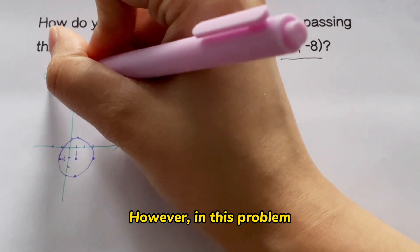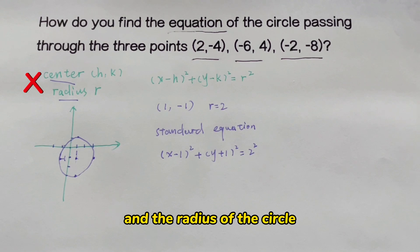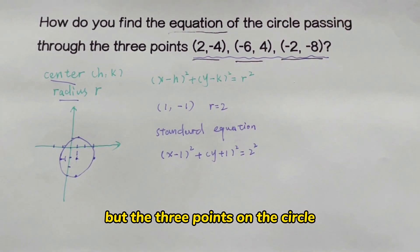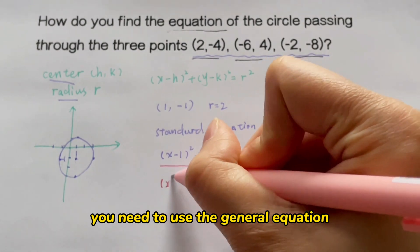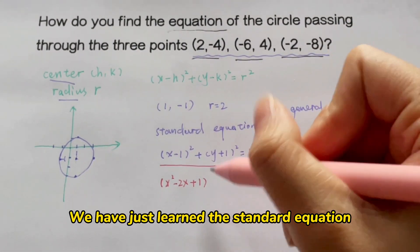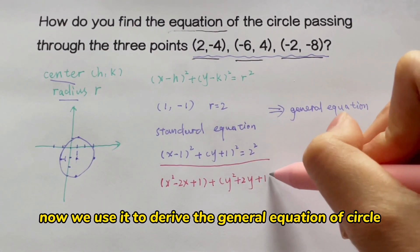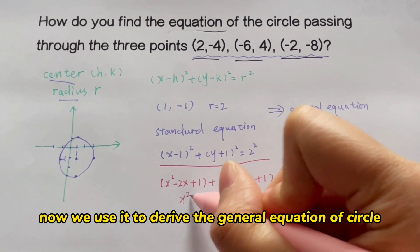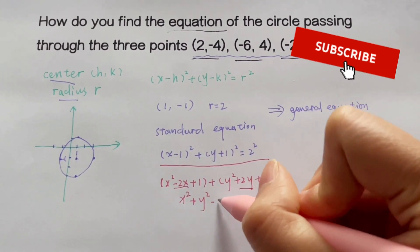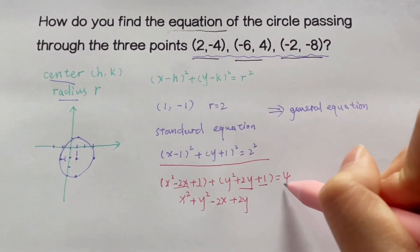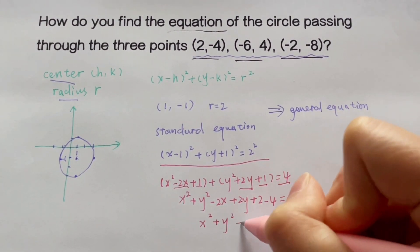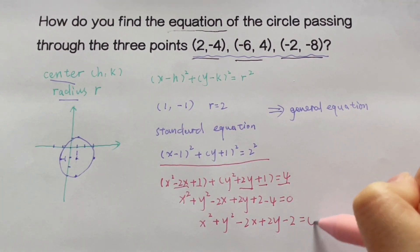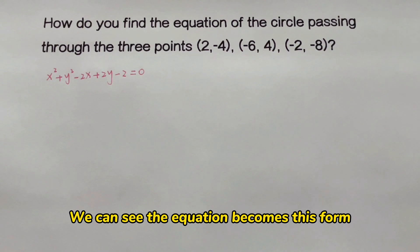However, in this problem we are not given the center and the radius of the circle, but three points on the circle. If you want to find the equation of the circle from three points, you need to use the general equation. We have just learned the standard equation; now we use it to derive the general equation of a circle.